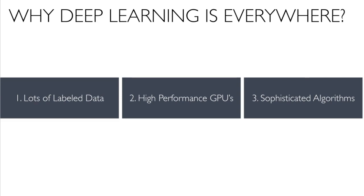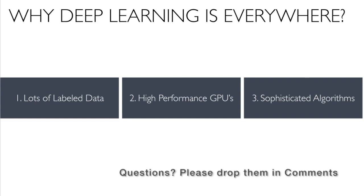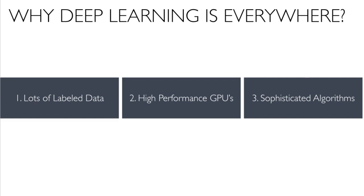So why is deep learning everywhere all of a sudden? To do deep learning you need three things: lots of labeled data, high-performance GPUs that can process tons of information at a faster rate, and sophisticated algorithms. In the past, we didn't have enough labeled data and high-performance GPUs were extremely expensive. But in the last four to five years, with the rise of big data and people continuously labeling information, we now have huge access to labeled data, enabling deep learning at a much faster rate.